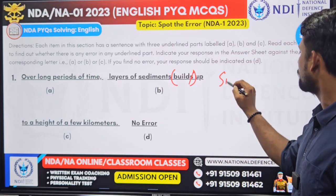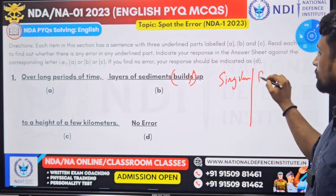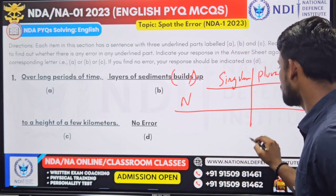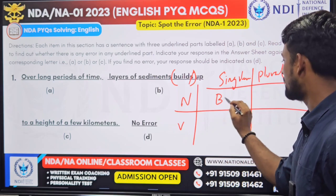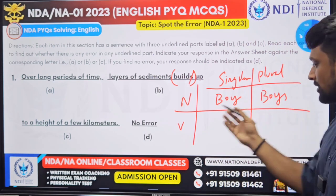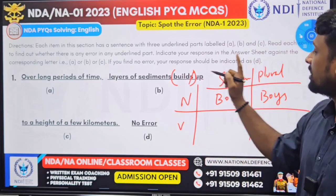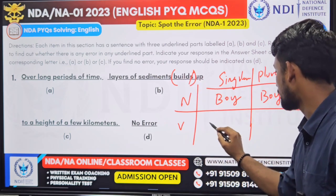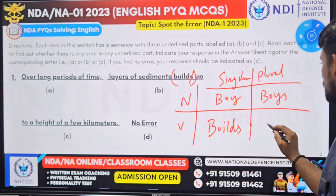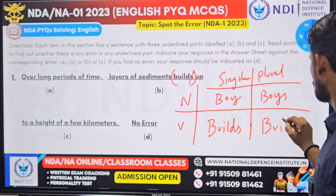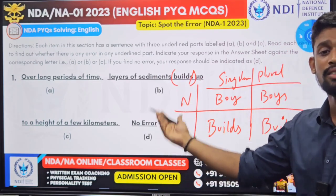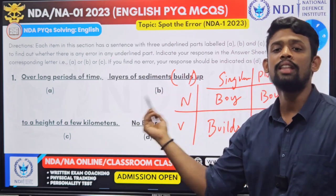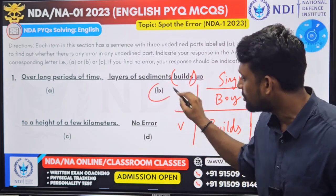There is a concept of singular and plural. We are going to categorize into noun as well as verb. In noun: 'boy' is singular, 'boys' is plural. In verb: 'builds' is singular, and 'build' is plural. So here, 'layers of sediments' is plural, and 'builds' is singular — that is incorrect. Hence we have to go for the plural verb, which is 'build', not 'builds'. So our answer is option B — the error is in B.